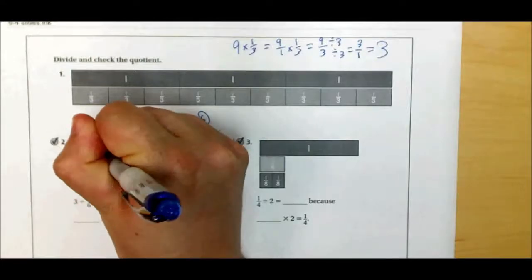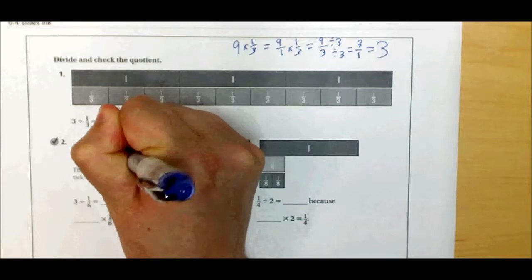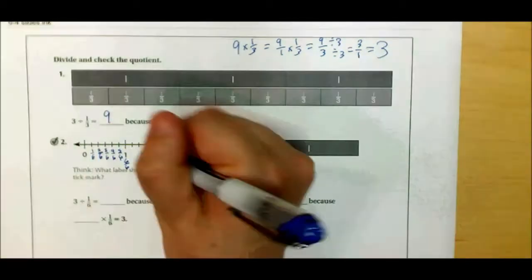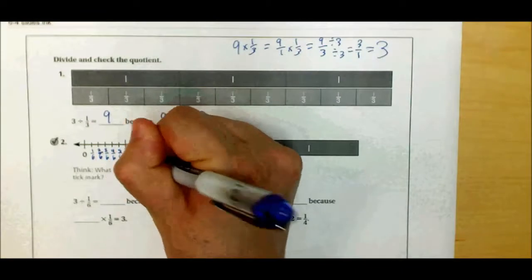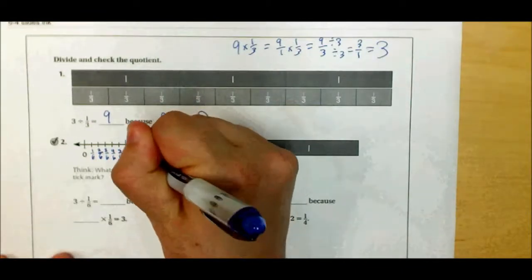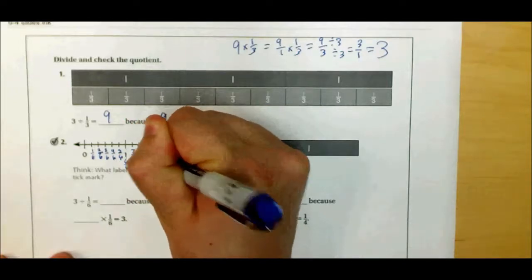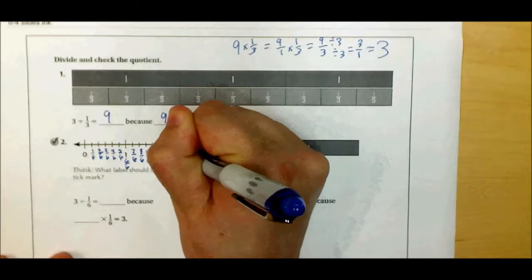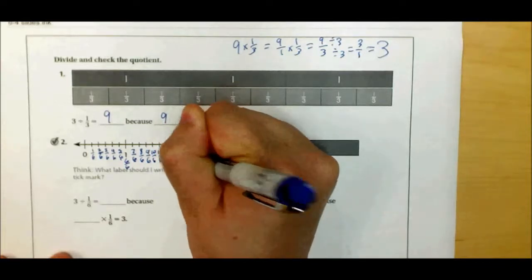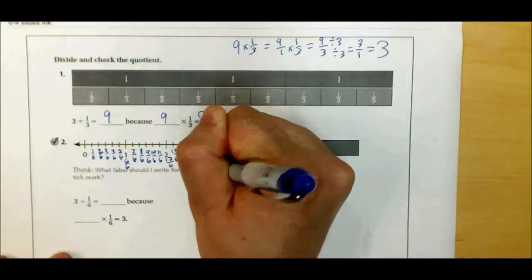This is 1 sixth, 2 sixths, 3 sixths, 4 sixths, 5 sixths, 6 sixths. And this is 7 sixths, because I have more than 1 pie. So I'm just going to keep counting the total sixths that I have. 10 sixths, 11 sixths, 12 sixths, 13 sixths, 14 sixths, 15 sixths, 16 sixths, 17 sixths, and 18 sixths.